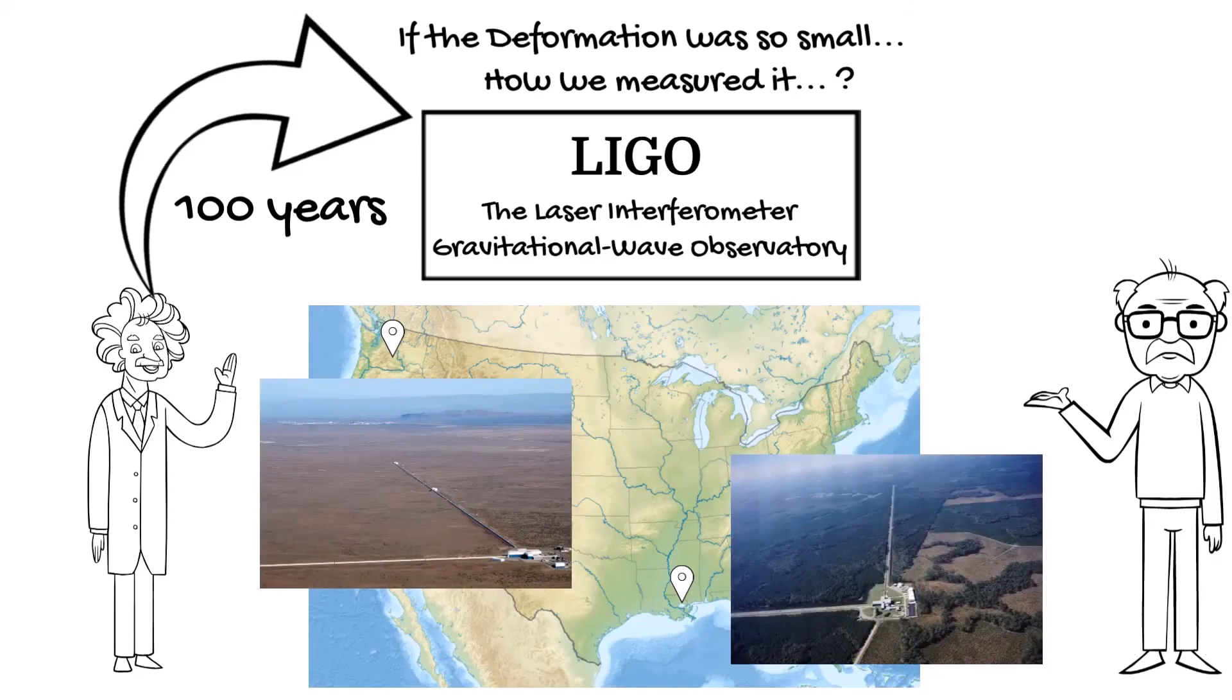Each observatory consists of two arms, four kilometers each.